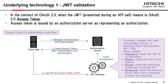I describe the underlying technology behind the zero-trust network using the traditional API system. First, JWT validation. In the context of OAuth 2.0, the JWT presented during an API call is the OAuth 2.0 access token, issued by an authorization server as representing an authorization. In a typical OAuth 2.0 authorization code flow, the client application delegates authentication and authorization to the authorization server. The authorization server issues an access token, and then the client application calls APIs of the API gateway with the access token. The API gateway validates the JWT, generally using the authorization server following token introspection defined by RFC 7662.